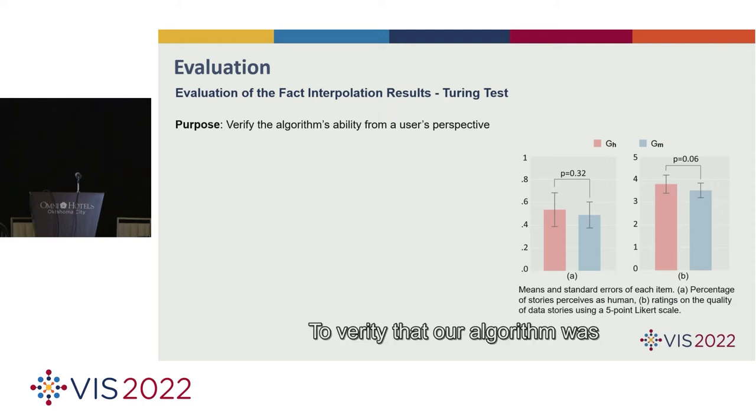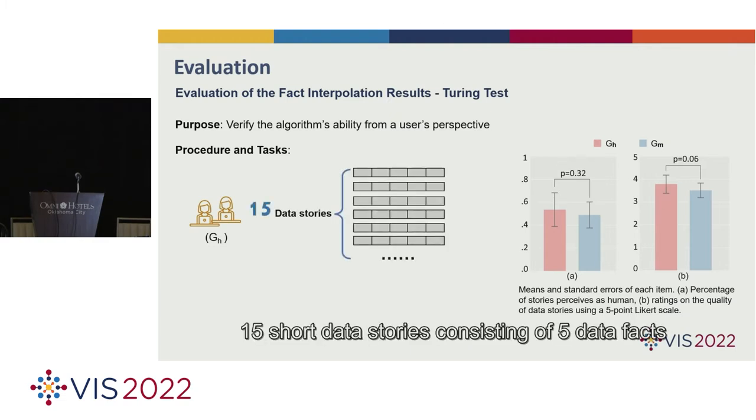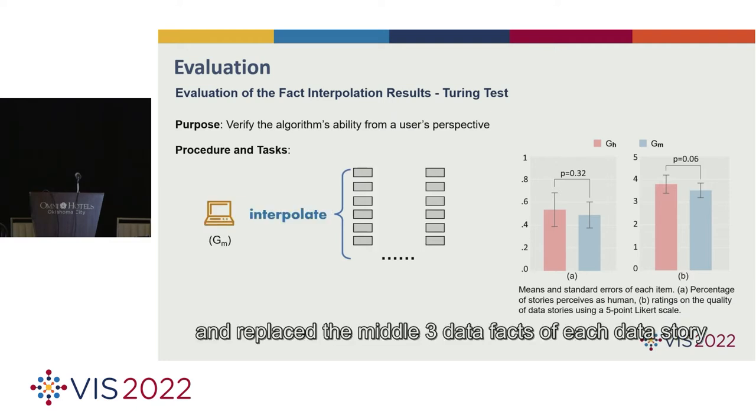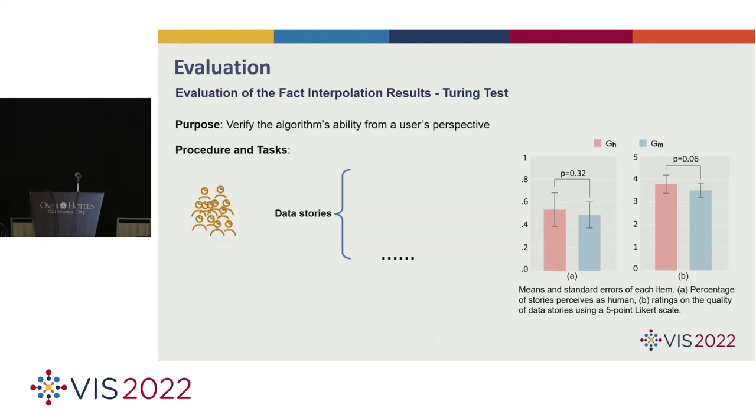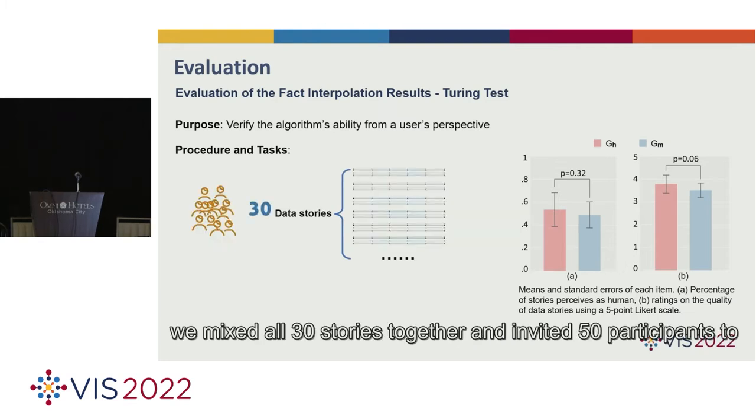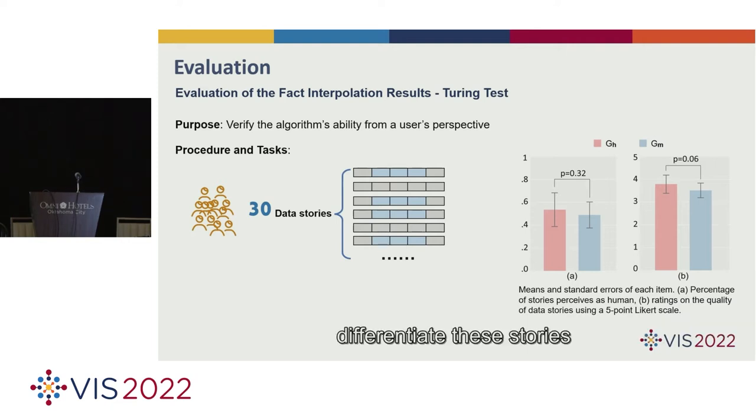A quantitative experiment using five-fold cross-validation is to estimate the performance of the proposed interpolation technique. The results showed that the interpolation effect is close to the ground truth. To verify that our algorithm was able to create high-quality results from a user's perspective, we manually created 15 short data stories consisting of five data facts, and replaced the middle three data facts of each data story with three data facts generated by our interpolation algorithm.